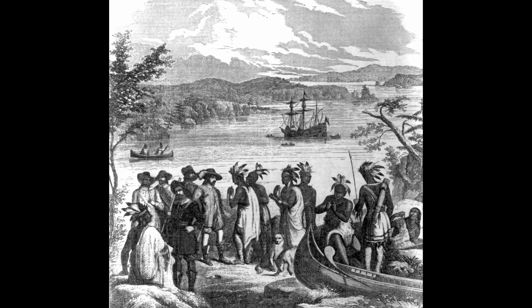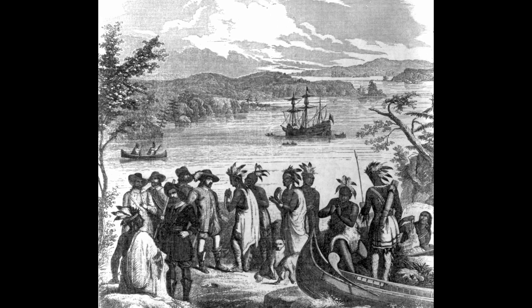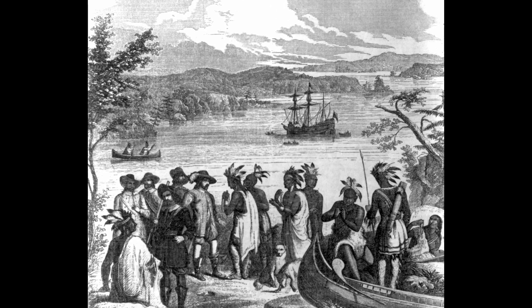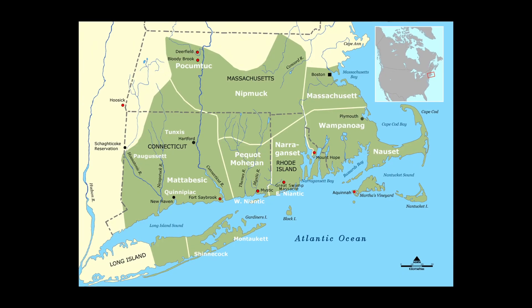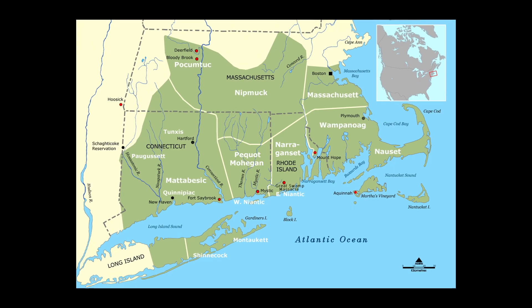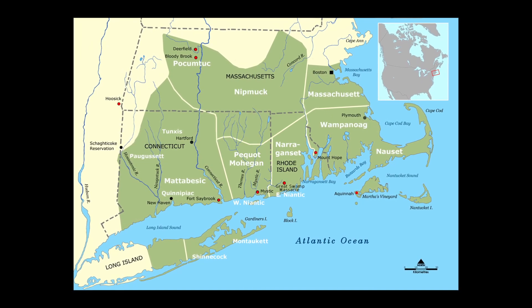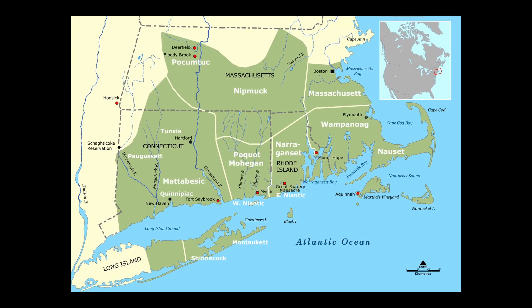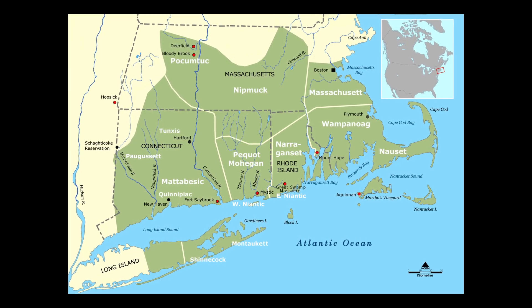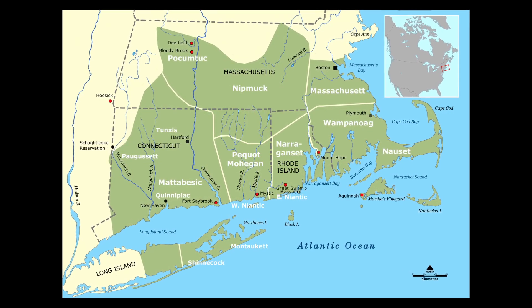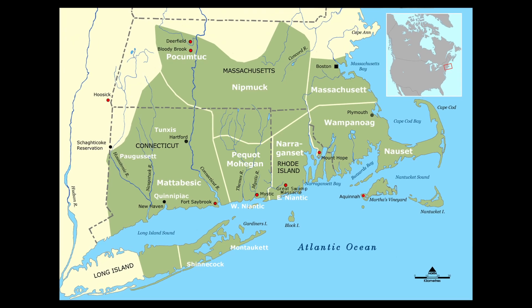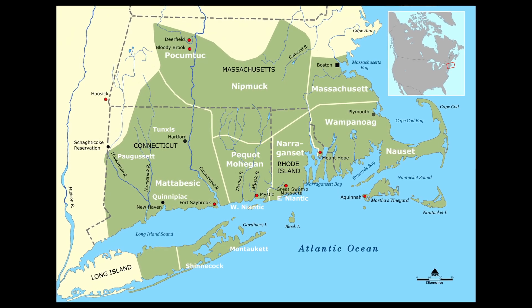Unintentional disease transmission continued into the 1600s when English colonists populated the New England colonies of Plymouth, Massachusetts Bay, New Hampshire, Connecticut, New Haven, and Rhode Island.